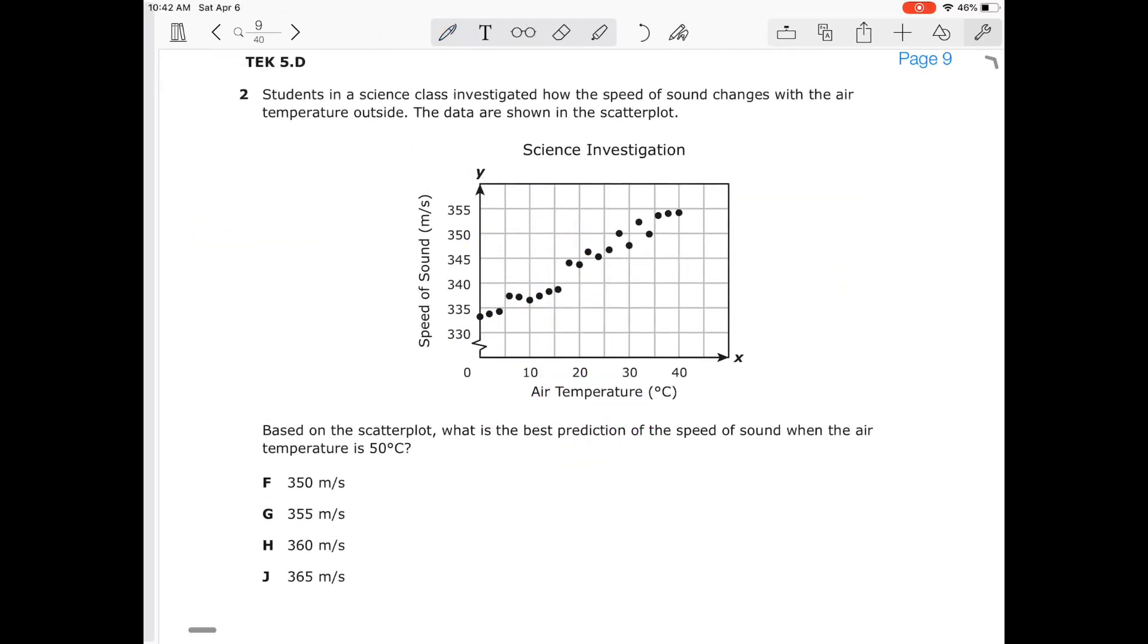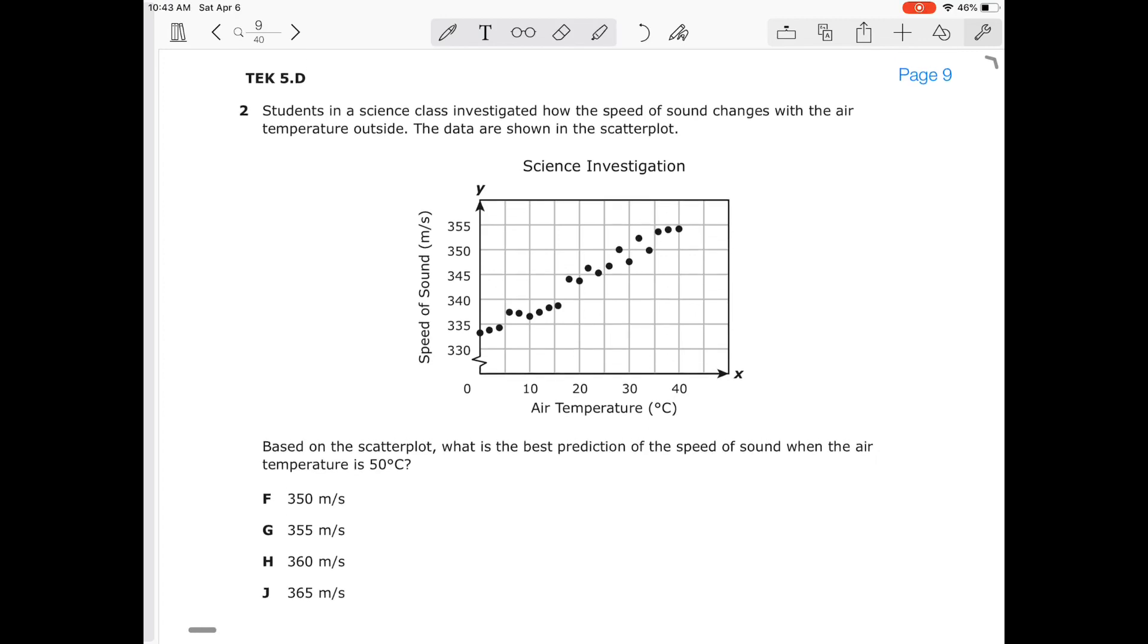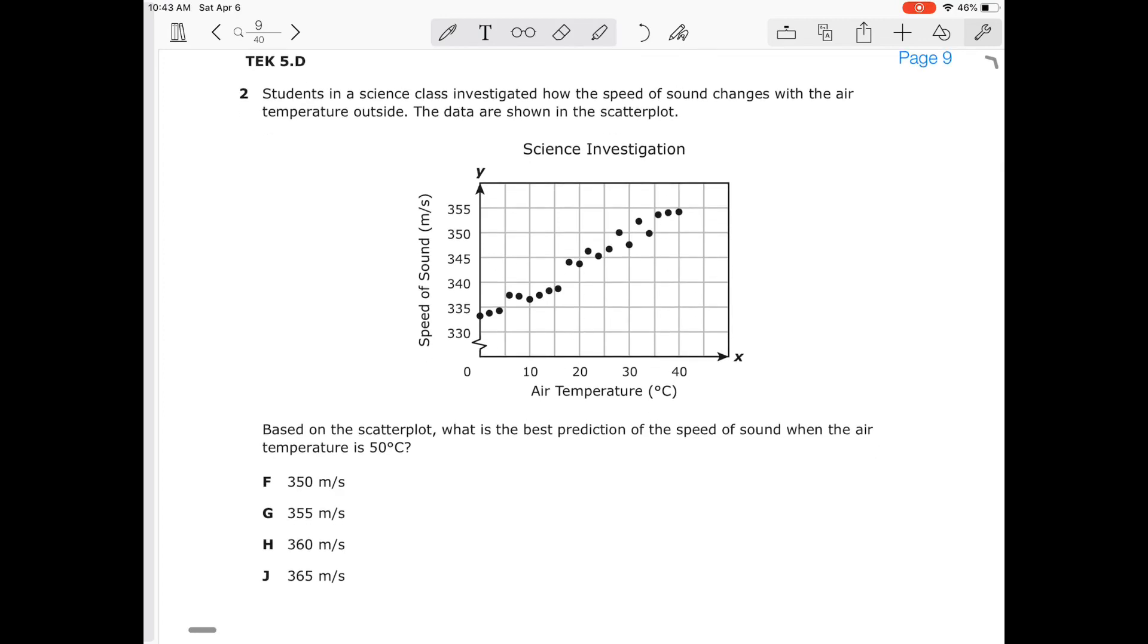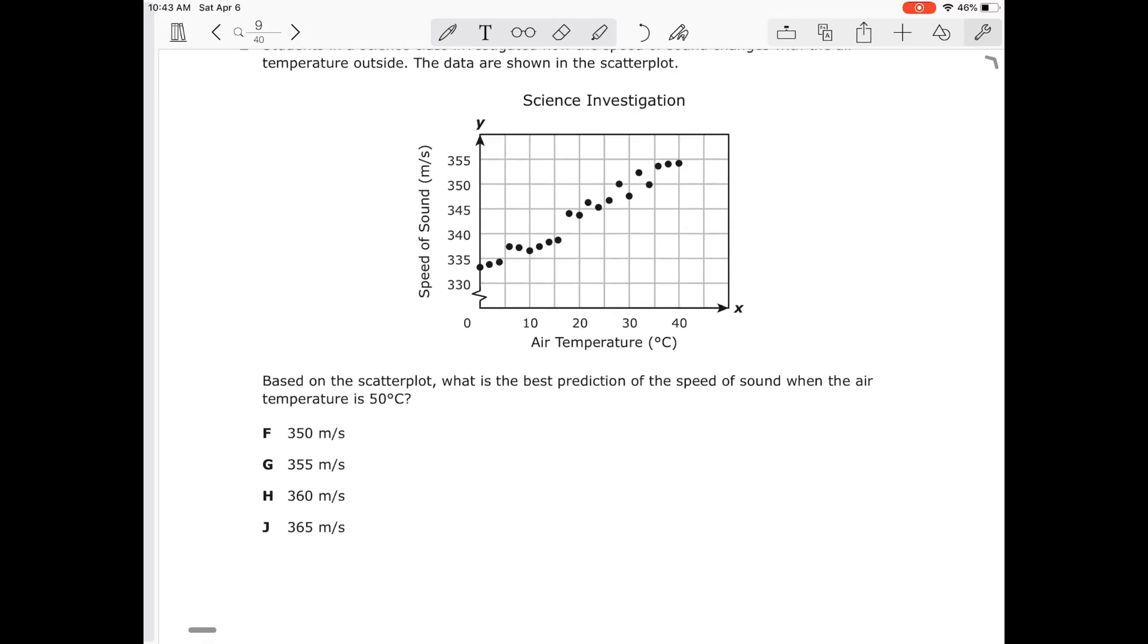Welcome students. We're going to go over some problems. I'm going to do number two. It's under TEK 5D. The students in the science class investigated how the speed of sound changes with the air temperature outside. We're given a scatter plot, and that's the data that they gathered. Based on the scatter plot, what is the best prediction of the speed when the air temperature will reach 50 degrees Celsius?